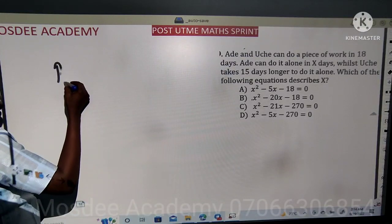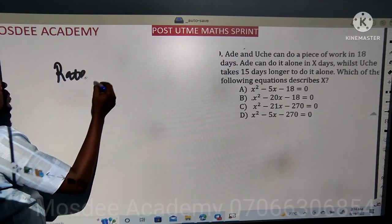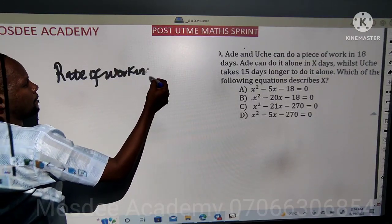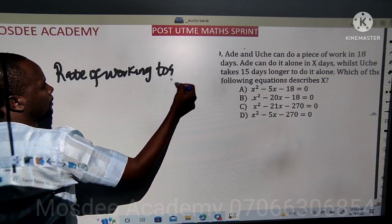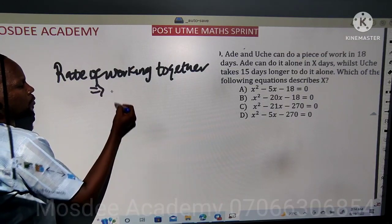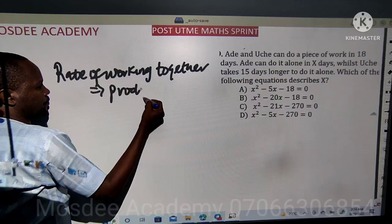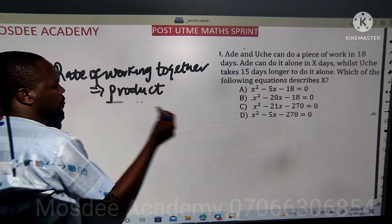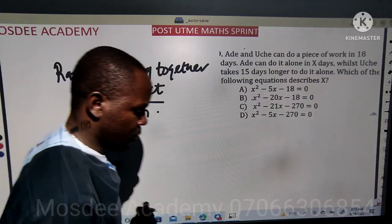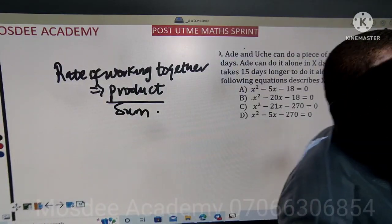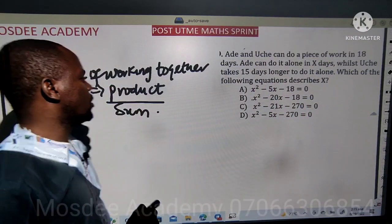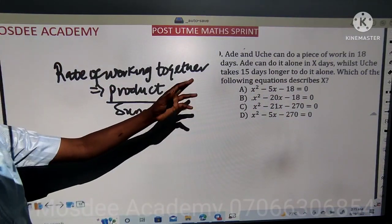The rate of working together for two people is always equal to the product of work over the sum of it. That is the only concept you need to use here to get your answer. So if we are using that concept here, what we just do now is just follow the line.